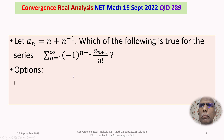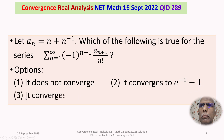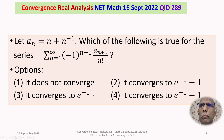We are given four options. Option 1: it does not converge. Option 2: it converges to e^(-1) - 1. Option 3: it converges to e^(-1). Option 4: it converges to e^(-1) + 1.